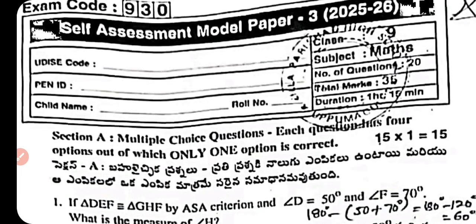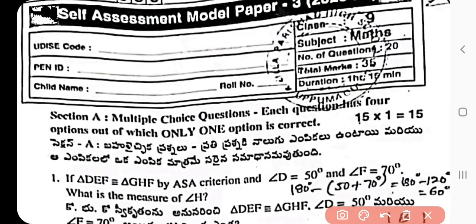Hello everyone. In this video, self-assessment model paper 3, 2025-26, Class 9th subject Maths answer key is discussed. The question paper download link is in the telegram group in the description. Please follow the link, like, share and comment on the video. Section A: multiple choice questions — each question has four options, out of which one option is correct.